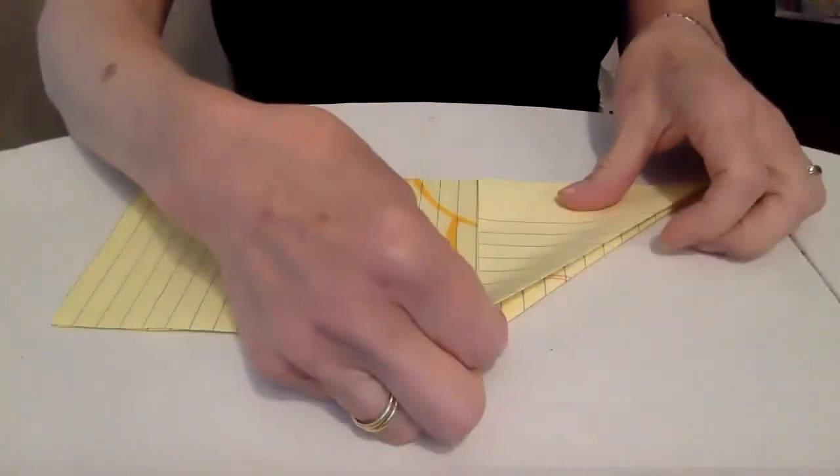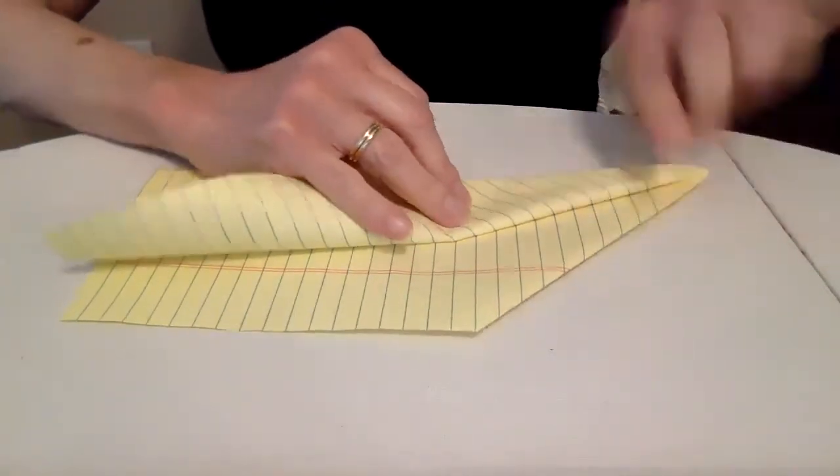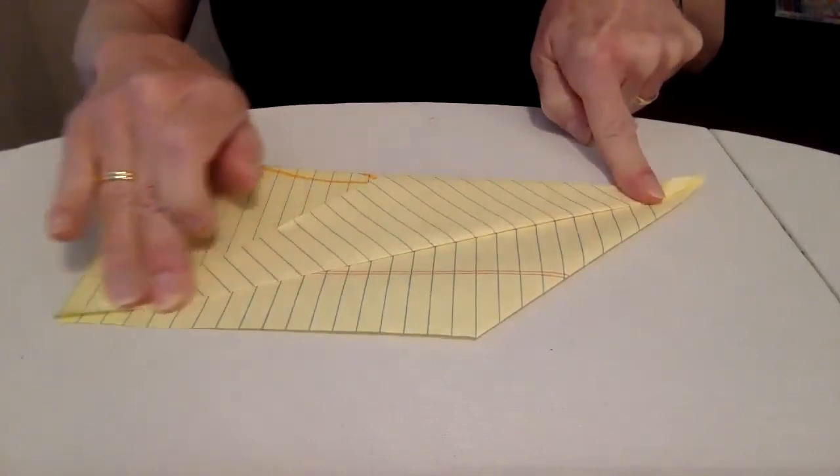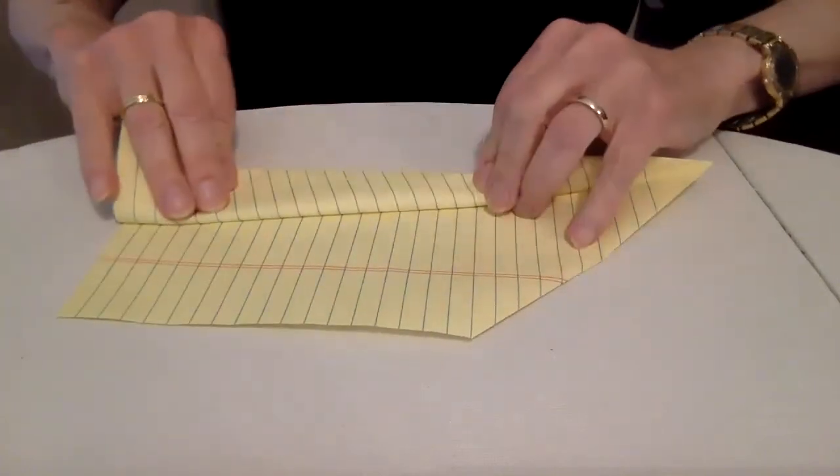Then I go here, right here where there's a point, and I fold it down. I run my finger across the crease. And I fold it down again.